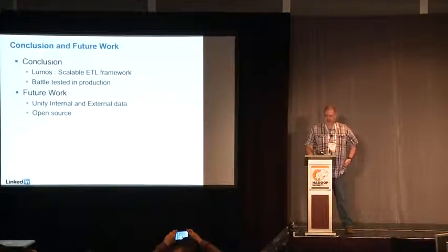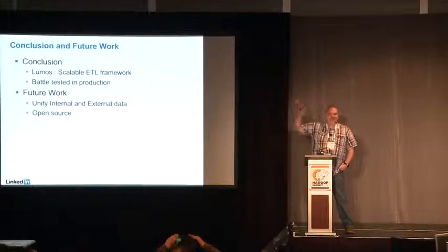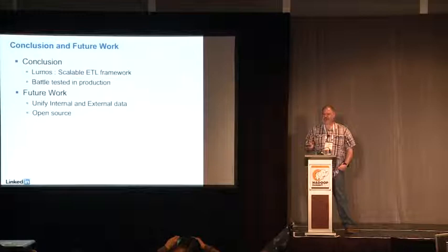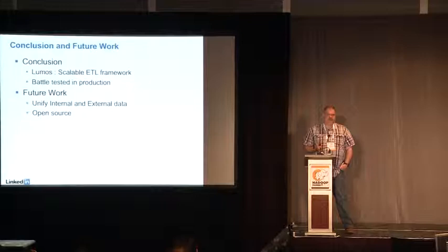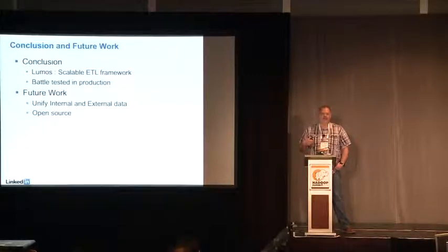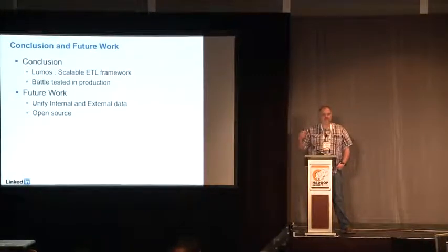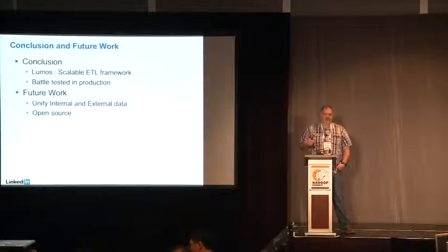We rolled Lumos out last year and it's worked very well. Since then, data volume has grown — more tables, more records, more bytes — but our actual delivery SLAs have not moved hardly at all. We're still getting data out by the same time we originally targeted. The work we need to do now is unify our internal ingestion with external ingestion, making sure that as we bring data sources in from the outside, we annotate them correctly so that Lumos can understand what the data is and what it needs to do with it. And of course, open sourcing.